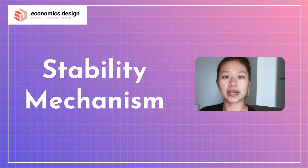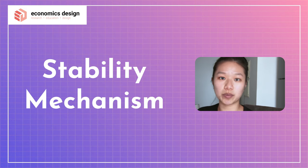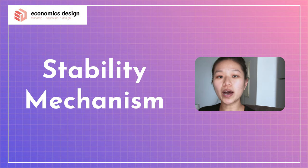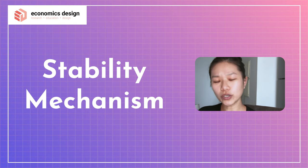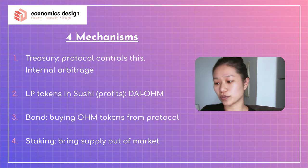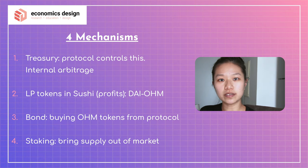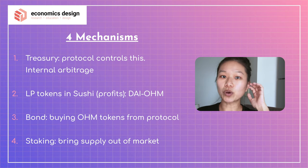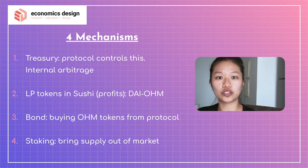Let's dive into the stability mechanism. When we talk about creating stablecoins, the key to success is not about price volatility but about how it maintains stability — that will then be shown in the price activity. We want to understand what mechanisms are in place to create stable value. There are four mechanisms: the treasury, LP tokens, bonding, and staking. Part of this protocol is owned by the treasury — called treasury controlled value — which controls part of these values to do internal arbitrage to maintain the price for OHM tokens.